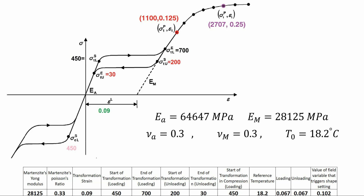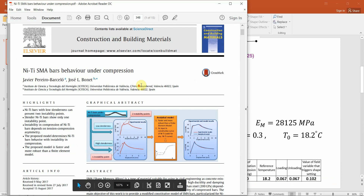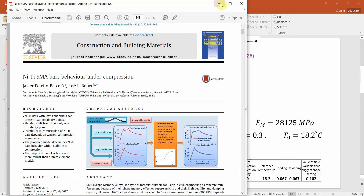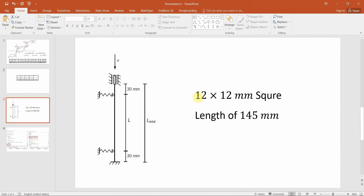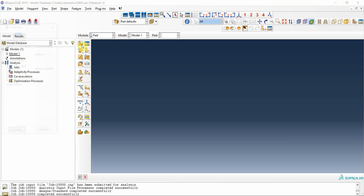I want to show this facility in a specific example: a bar that is under axial compression. I have used material data from a specific article. The geometry is a square cross-section with a 12 millimeter dimension and a length of 145 millimeters. At the end of the model, after we run it, we can extract the stress-strain curve and see the plasticity in the geometry after the axial load.